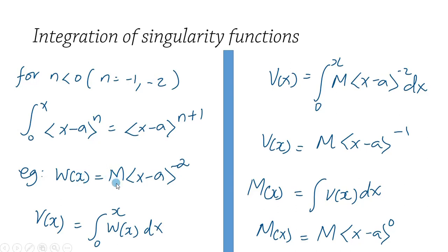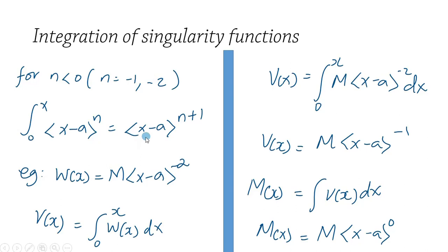For example, if the load function w(x) equals M times (x minus a) to the power negative two, then integrating this load distribution function gives the shear force function V(x) equals M times (x minus a) to the power negative one. Integrating further gives the bending moment M(x) equals M times (x minus a) to the power zero. We simply add one to the power, maintaining n plus one.